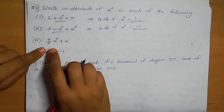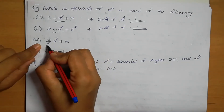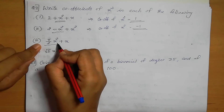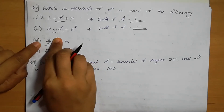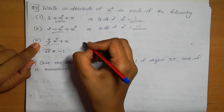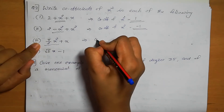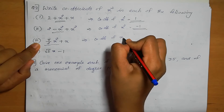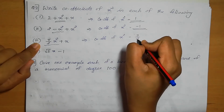Question number 3: pi/2 times x squared plus x. The x squared term has pi/2 alongside it. So the coefficient of x squared is pi/2.